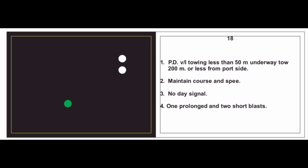Card 18: A power driven vessel towing, less than 50 meters, underway with tow 200 meters or less — the card says port side but this is an error; it is actually seen from starboard side. We maintain our course and speed. No day signal. Sound signal: one prolonged blast and two short blasts. Note: there are some errors in these downloaded cards; I will always state the correct wording.